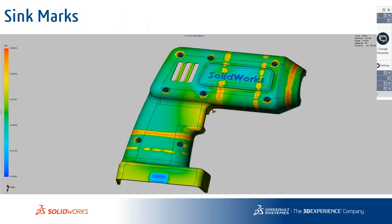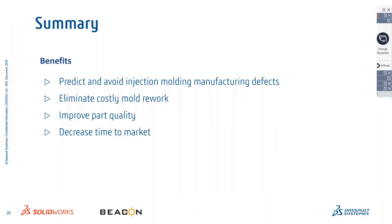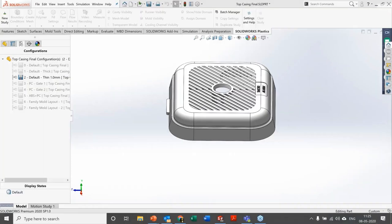Volumetric shrinkage is shown as a color-coded map indicating the percentage of shrinkage in different areas of the part. Sink marks appear where there is non-uniform thickness — typically behind ribs underneath the model. Because of the thickness at those ribs, sink marks are predicted there. These can be solved by altering rib dimensions or adding adequate fillets. These functionalities help predict and avoid injection molding defects, eliminate costly mold rework, improve part quality, and decrease time to market.